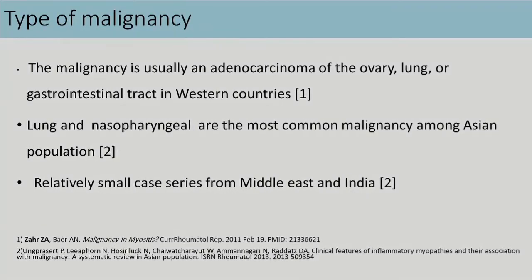The other question is: what is the risk period of malignancy? Most studies showed that if a patient is going to develop cancer-associated myositis, it will occur within two years before diagnosis of myositis or three years after. This risk extends up to five years from diagnosis, and the incidence rate is highest in the first year after diagnosis of myositis, reaching up to 60 to 70% of reported cases.